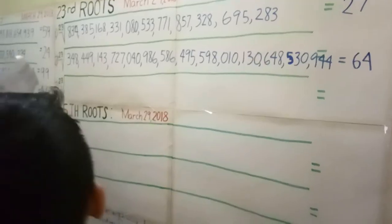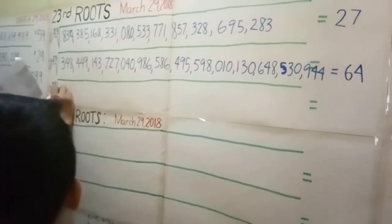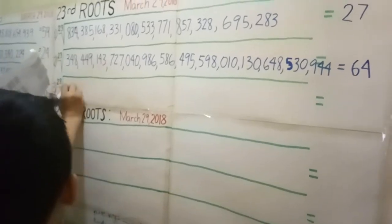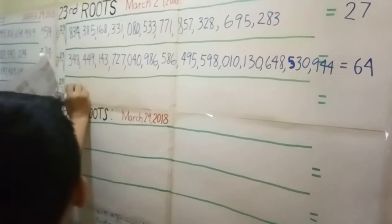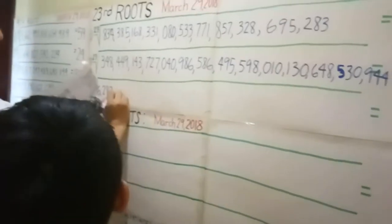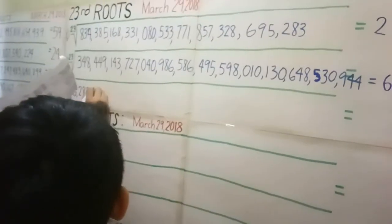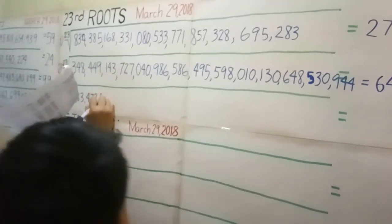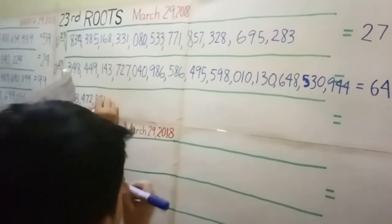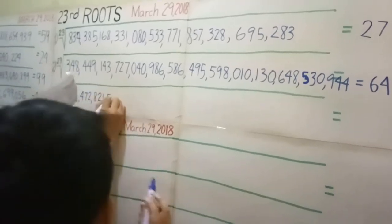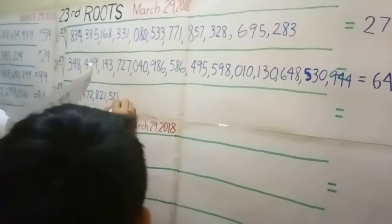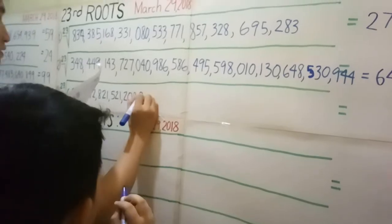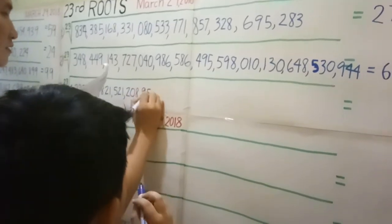Number three was the 23rd root of this number. Alright. The answer is even better — three.